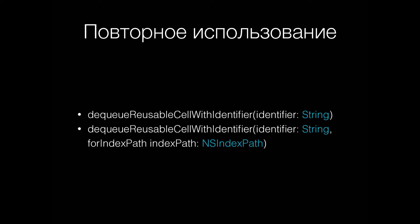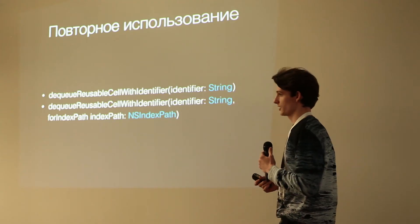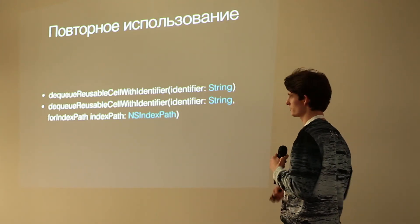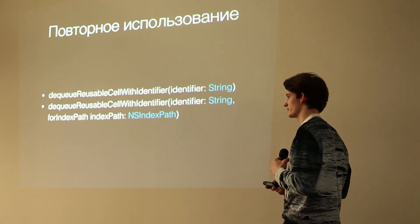Что касается методов самой таблицы: есть dequeueReusableCellWithIdentifier — старый метод, который пытался получить ячейку по идентификатору, мог вернуть nil, и нам нужно было её создать. И есть более современный метод, появившийся, кажется, в шестой версии iOS, который также принимает indexPath, но гарантированно вернёт не nil. До этого нам нужно было где-то её зарегистрировать методами, которые были на предыдущем слайде.